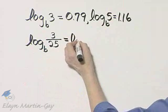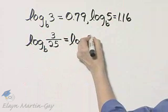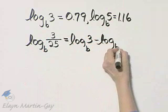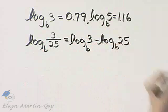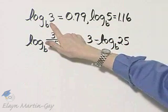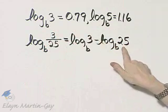It's log base B of numerator 3 minus log base B of denominator 25. Now we're okay here because we have been given this value, but we're not okay here.